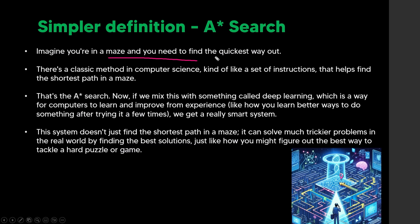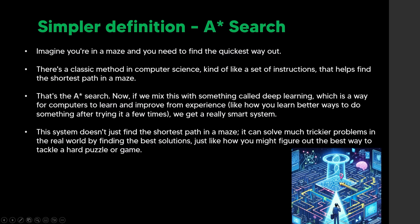For A-Star search, imagine you're in a maze and need to find the quickest way out. It's like a set of instructions that help you find the shortest path. Once you mix this with deep learning and get the computer to learn from experience, you get a really smart system that can solve much trickier problems — like figuring out the best way to beat a video game.